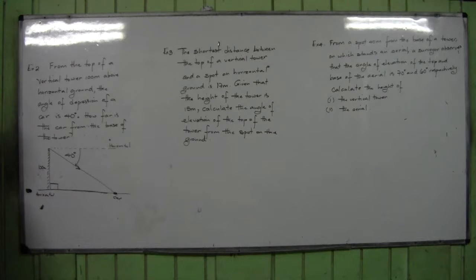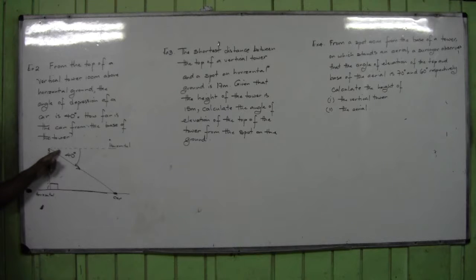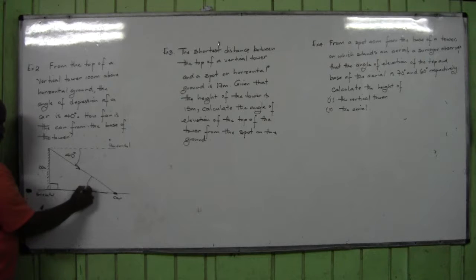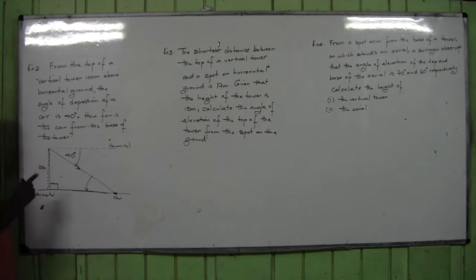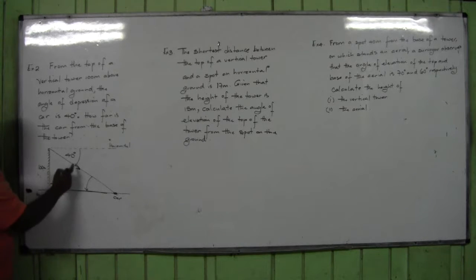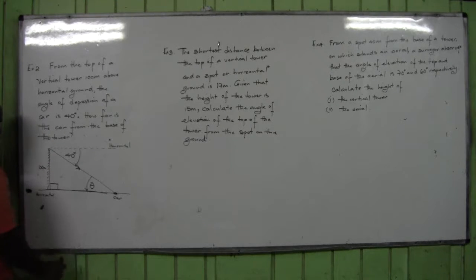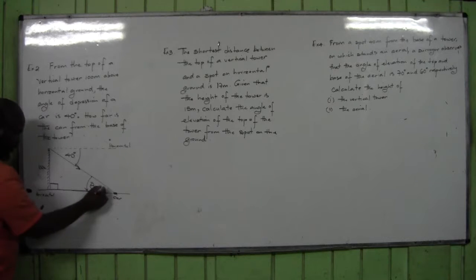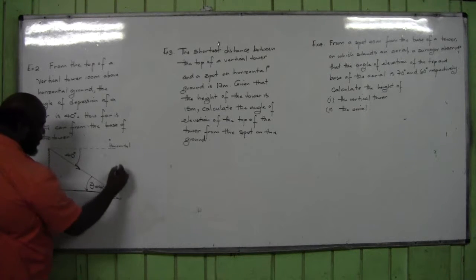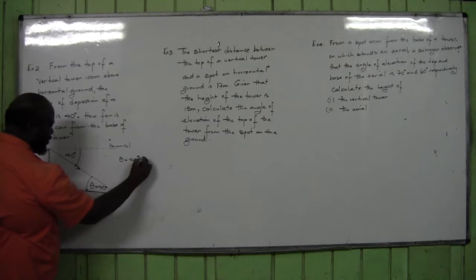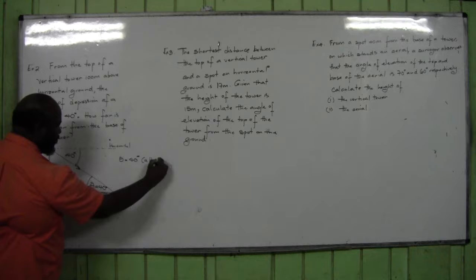Now let's continue and solve the question. If the angle of depression is 40 degrees, what is the alternate angle down at the base? The alternate angle is also 40 degrees — they are alternate angles. So I'm going to say to the examiner: theta equals 40 degrees, they are alternate angles.